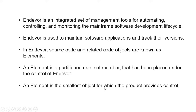The element is the smallest object for which Endeavor provides control. When initially created, as each stage moves on, it will be developed as required based on project requirement changes. It can start as the smallest object and grow to have a huge number of lines of code, or it may have minimal lines of code. We can control the entire element throughout the software development lifecycle.